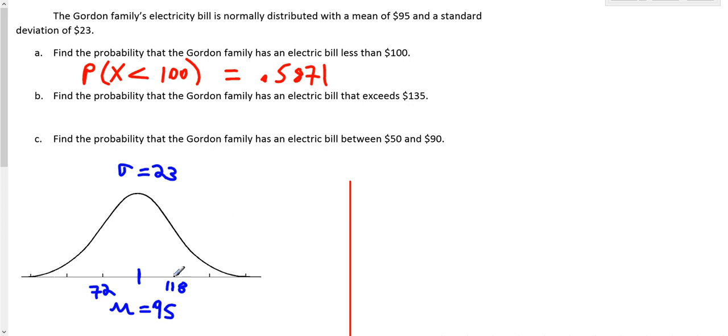So if you add another 23 to the 118, to get to here, you get 141. That's two standard deviations, and then a third one would give you 164. And if you continually subtract 23, 23 taken away from 72 gives you 49 here, and 23 taken away from 49 gives you 26 here. So this would be the scaling for this particular normal distribution.